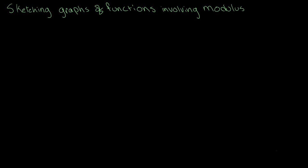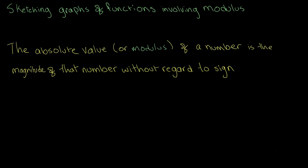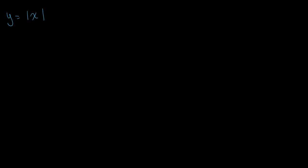In this video I will be teaching you how to sketch the graph of a function involving modulus. As a quick recap, the absolute value or modulus of a number is the magnitude of that number without regard to sign. For example, the modulus of 4 is the same as the modulus of negative 4, because both numbers have the same magnitude of 4.